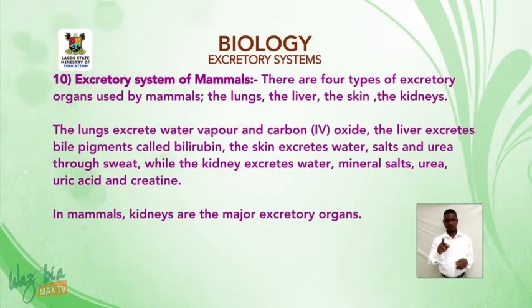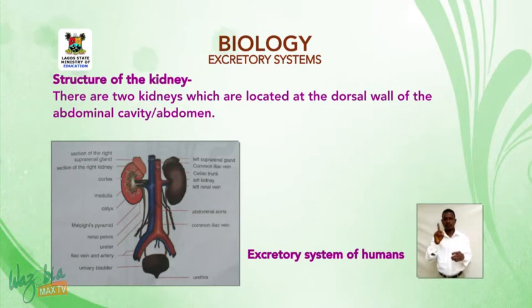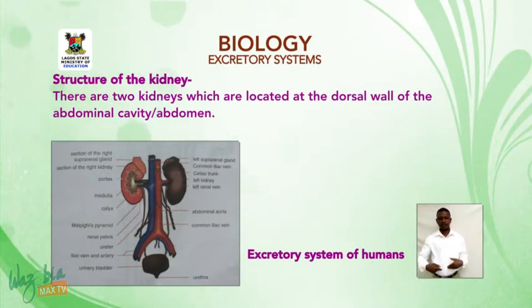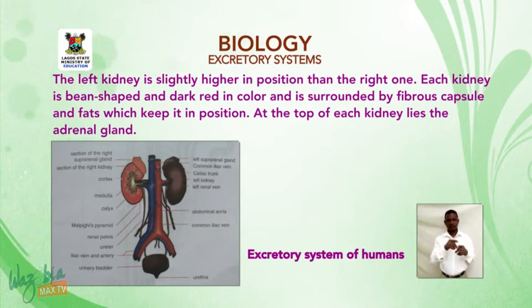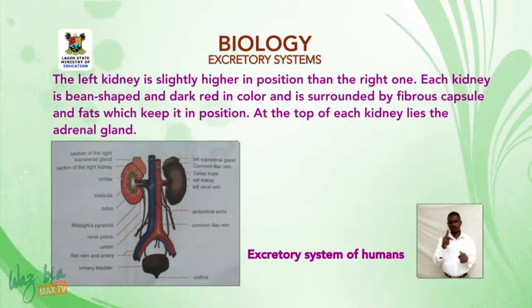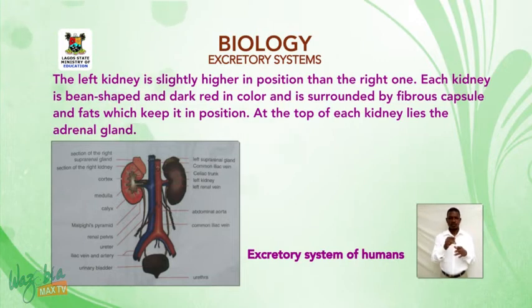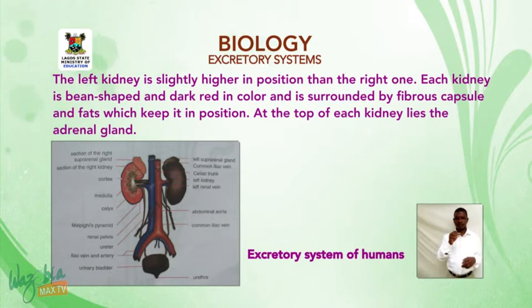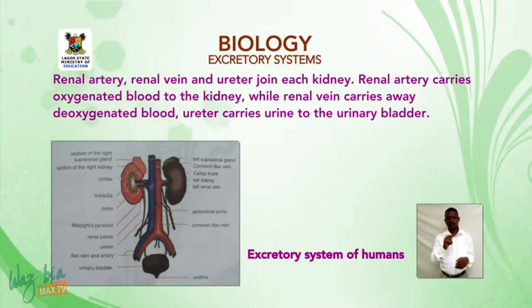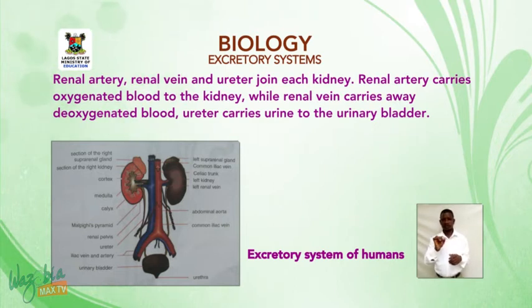In mammals, the kidneys are the major excretory organs. There are two kidneys located at the dorsal wall of the abdominal cavity; the left kidney is slightly higher in position than the right. Each kidney is bean-shaped, dark red in color, and surrounded by a fibrous capsule and fat which keep it in position. At the top of each kidney lies the adrenal gland.